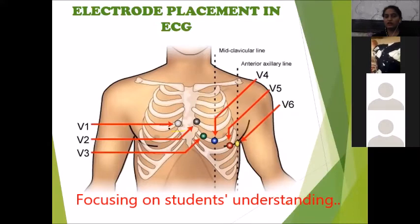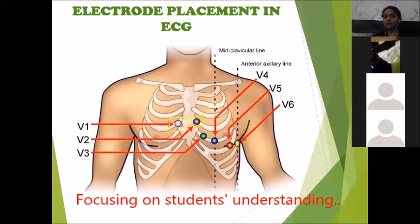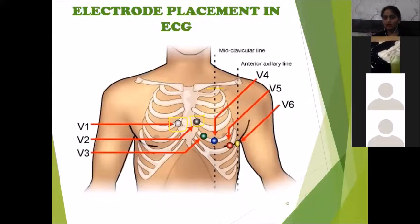For chest lead placement, V1 is placed in the 4th intercostal space. V2 is placed at the same level on the left side. V4 is placed at the mid-clavicular line, just below the nipple region.